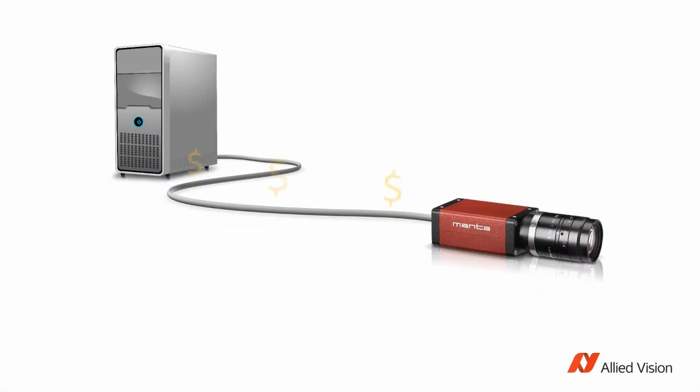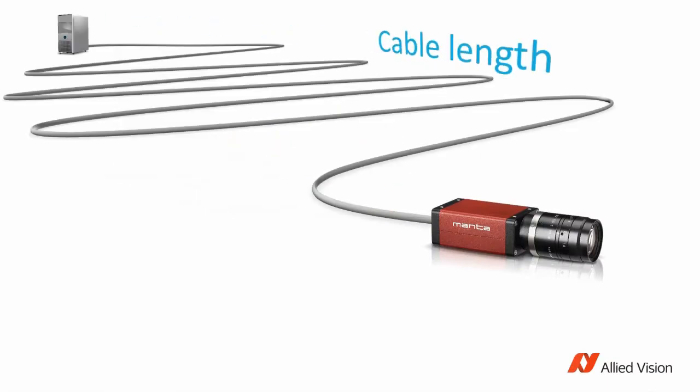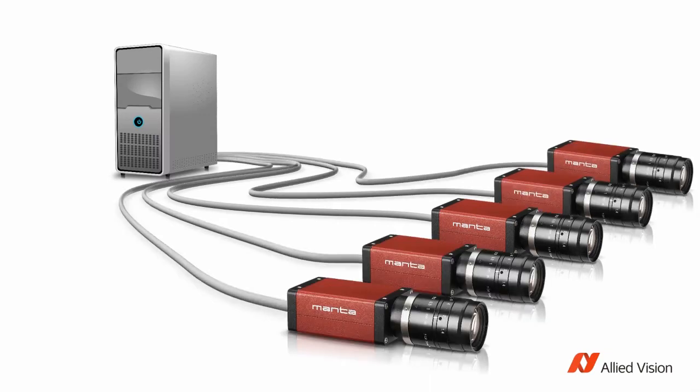Okay, but why not just take the interface with the highest bandwidth and make it a unique standard? Unfortunately, that's not that easy. There are other factors that must be considered — for example, cost, cable length, or the ability to network multiple cameras within a system. Cable length is often an issue; sometimes the camera needs to be several meters away from the host, and not all interfaces support that. Each interface has its strengths and weaknesses.